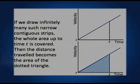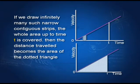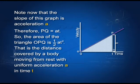We erect many such strips across the graph. If we cover all the area with these strips, the total area of the strips equals the total distance covered — as shown by covering the triangle with a mesh. So the distance covered is equal to the area of the triangle, and in general, the distance covered is equal to the area under the velocity-time graph.